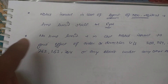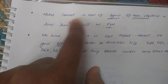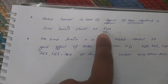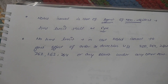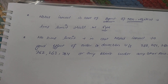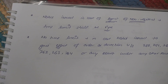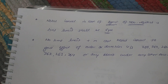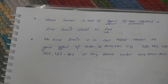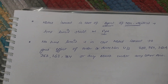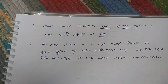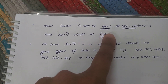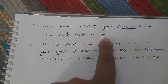The next exception: notice issued in the case of the agent of a non-resident — the time limit shall be 6 years. So while in normal cases the time limit is 4 years, in a similar case where notice is issued to the agent of a non-resident, that time limit increases to 6 years.